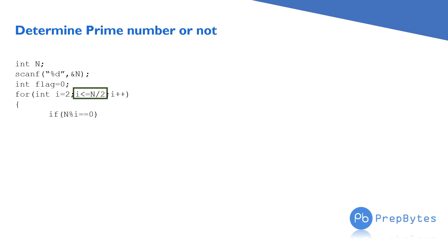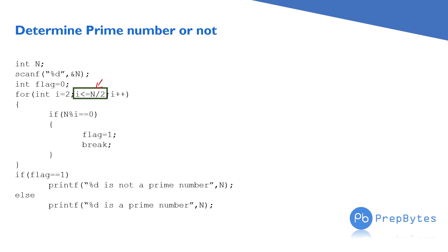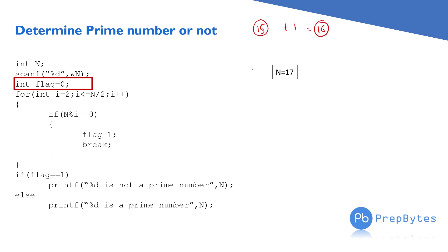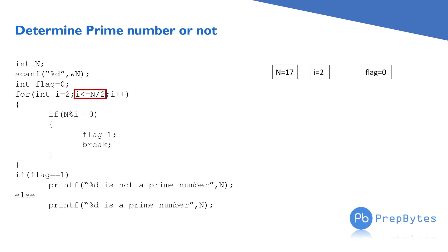The only change in the code is in one line — the loop now runs from i = 2 to i ≤ n/2. Let's trace an example: n = 17. The floor of 17/2 is 8, so the loop condition is i ≤ 8.